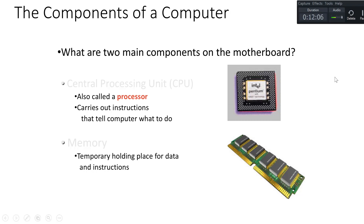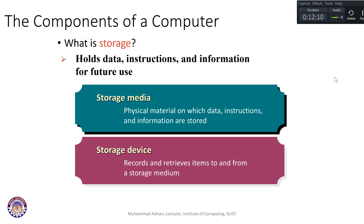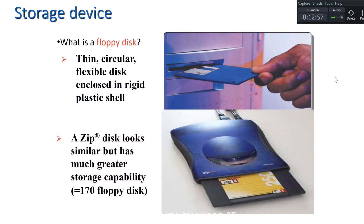Storage devices are used to store data and instructions for future use. Storage media is the physical material on which data, instructions, and information are stored — for example, a hard disk. A storage device records and retrieves items to and from the storage medium. Inside a hard disk, there are circular plates and a head with sectors and clusters that are used to permanently store data.